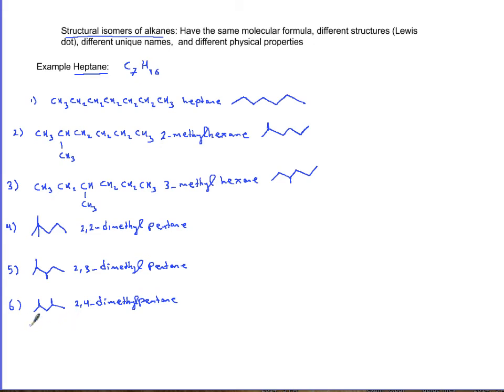The seventh isomer: I can go after pentane one more time and put one methyl on the third and another methyl on the third on the reverse. So this is 3,3-dimethylpentane.